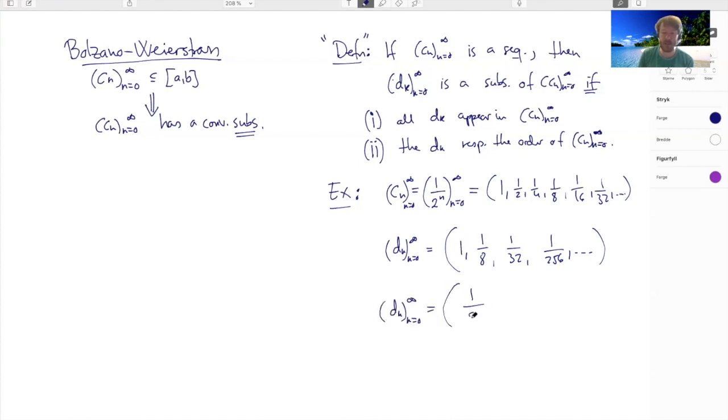If I did, for instance, one eighth, one, one over four, one over 256 and so forth, this would not be a subsequence because I'm not respecting the order. The terms here come in a different order than up here. Notice that while in a subsequence, I don't have to pick all the terms, I do have to pick them in order.